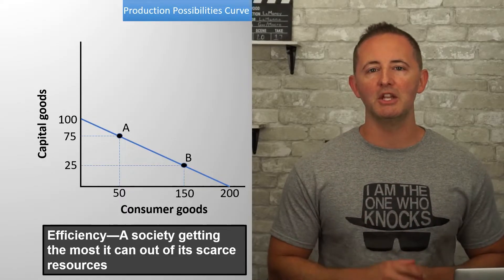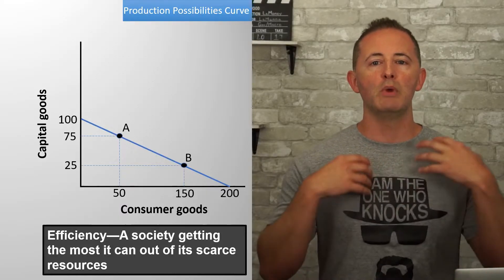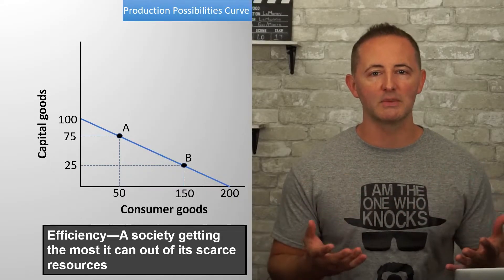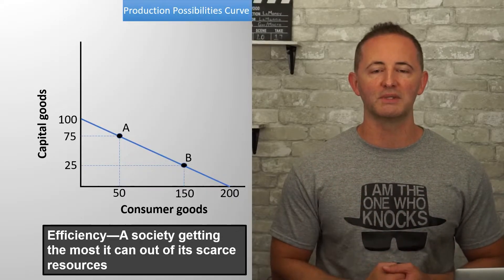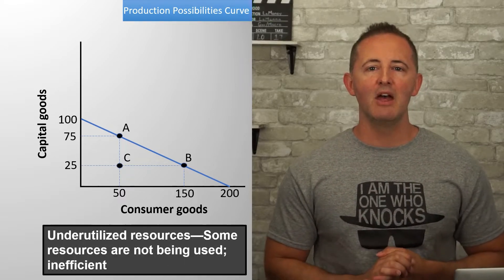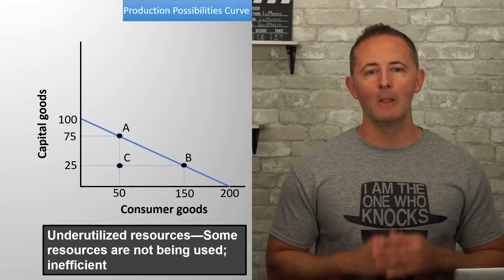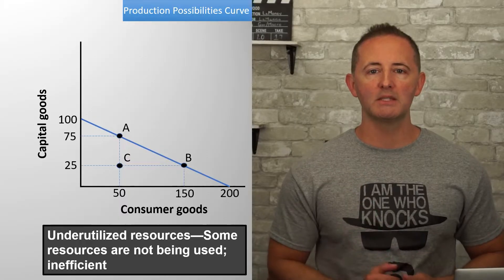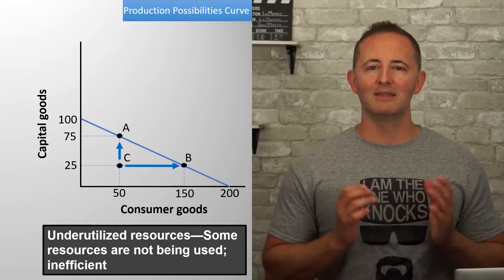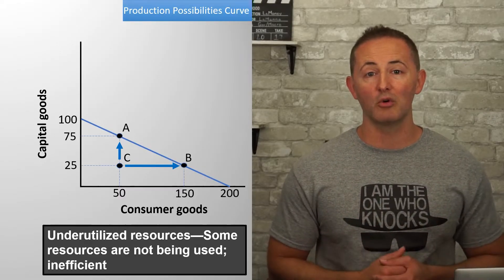Notice that we're not making any judgments about what combination of capital and consumer goods should be produced — we're simply saying what it is possible to currently produce. If our economy is operating anywhere inside of the PPC, this means it has underutilized resources, and this is inefficient. Look at point C — it's possible for them to produce more of both capital and consumer goods, meaning there are resources available that are not being used.